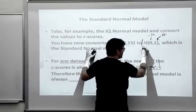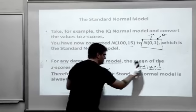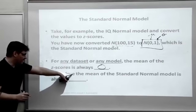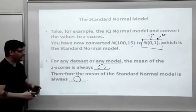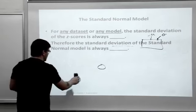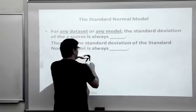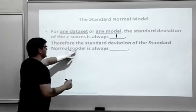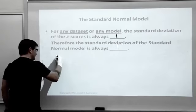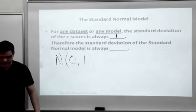This one right here: normal, mean of zero, standard deviation of one. For any data set, any model, the mean of the Z-scores is always equal to zero. Therefore, the mean of the standard normal model is zero. For any data set, any model, the standard deviation of the Z-scores is always equal to one. So the standard deviation of the standard normal model is always equal to one. That's the standard normal model: normal zero comma one.